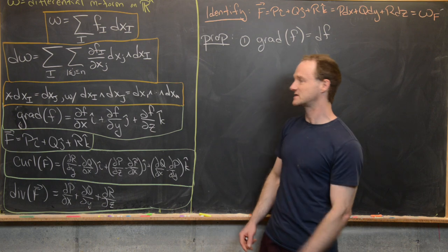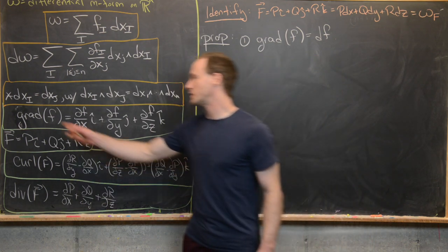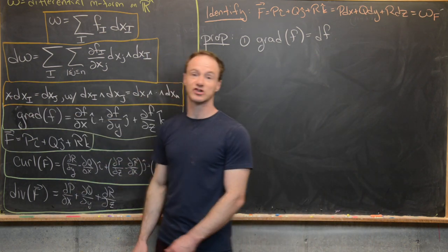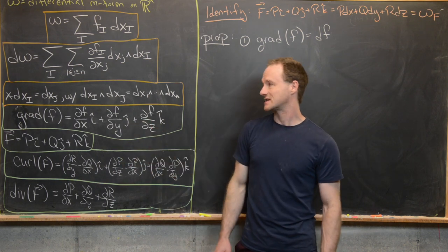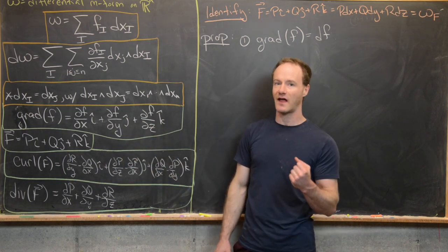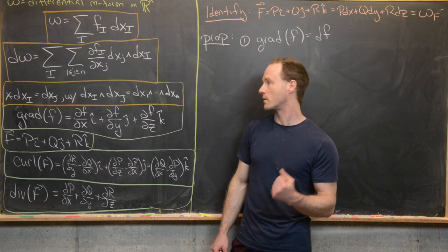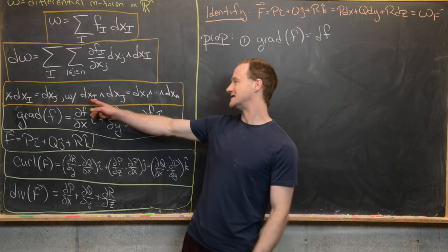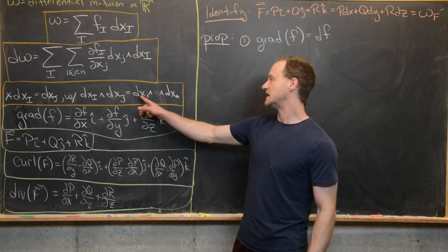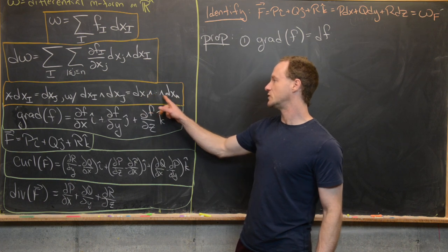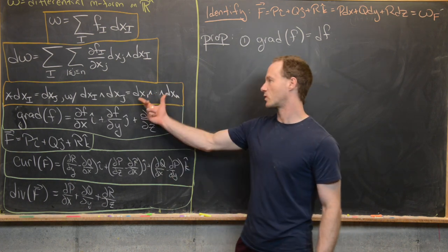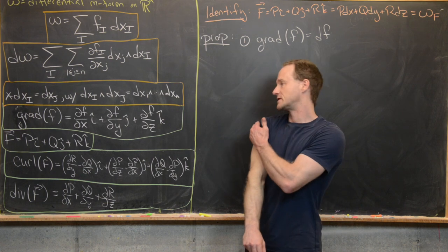Next, the Hodge operator. We define the Hodge operator star on dx_I to be dx_J, the special elementary form, such that dx_I wedge dx_J equals dx_1 wedge dx_2 all the way up to dx_n — in other words, it's the n-volume element.